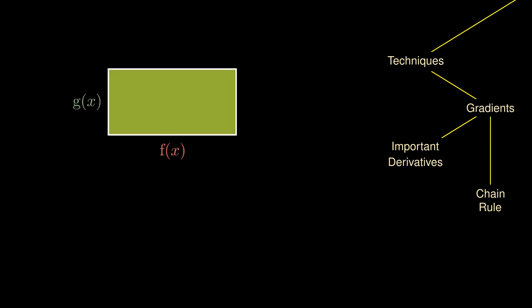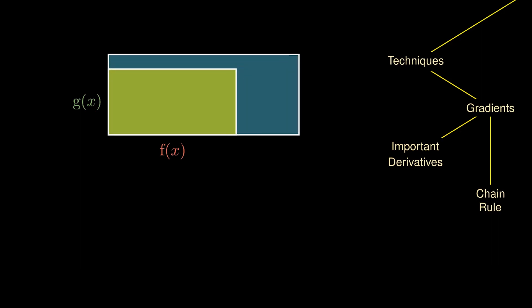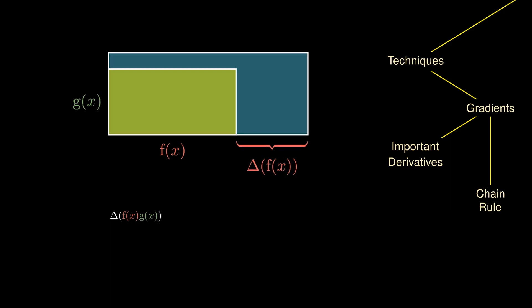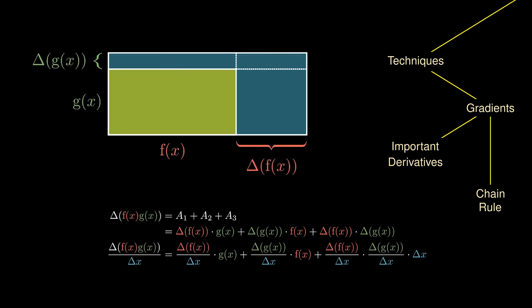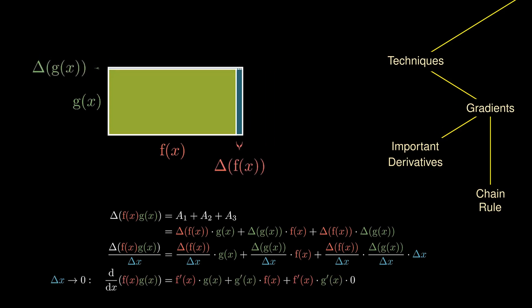Can we calculate the derivative of a product of two functions? Consider a rectangle with base f(x) and height g(x). We increase x just a little bit — the increase in the base is the change in f, and the increase in the height is the change in g. To calculate the derivative, we obtain the change in total area, which is made up of three portions: a1, a2, and a3. a1 has area of change in f times g; a2 has area of change in g times f; a3 has area of change in f times change in g. Dividing by the run and taking the limit as delta x approaches zero, since the last term is simply zero, we are left with the product rule for differentiation.